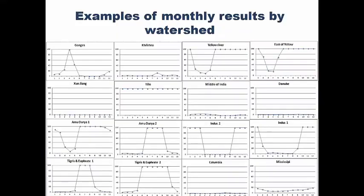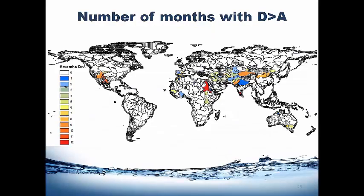This is to give you an idea of how important it is to take the monthly scale. These are different watersheds around the world with different patterns. Some, like the Nile, will really stay at the maximum value all year round. Some, like the Columbia Basin or the Danube, stay at the lowest range all year round. But most actually will see strong fluctuations, because water issues are quite binary — either there is a water issue or there is not, and it's quite seasonal. This also shows the amount of months where demand is larger than availability around the world.